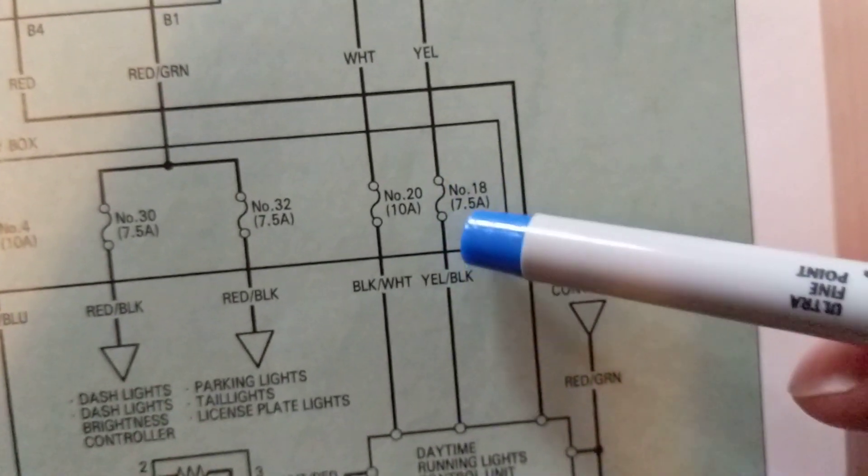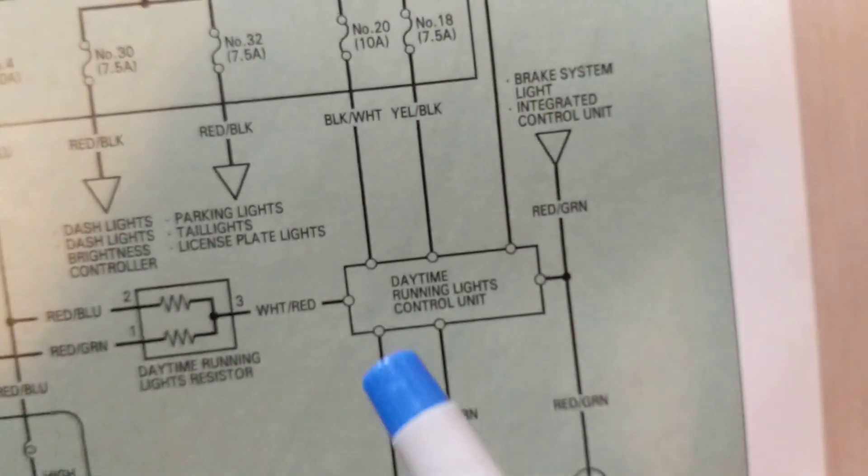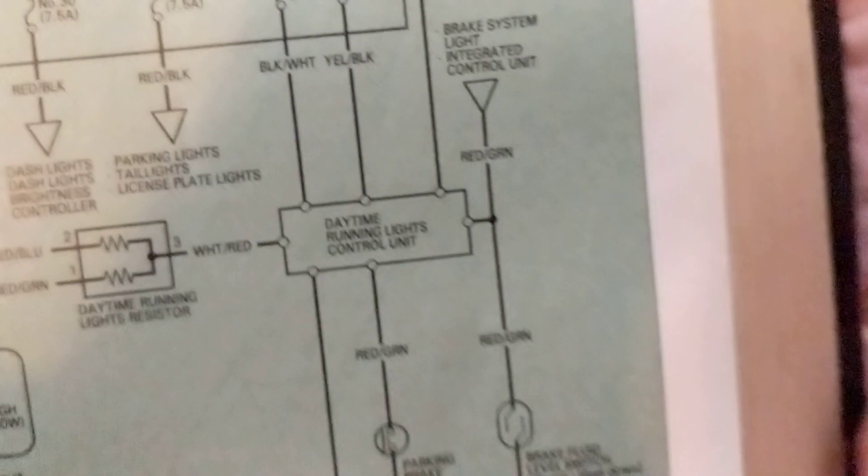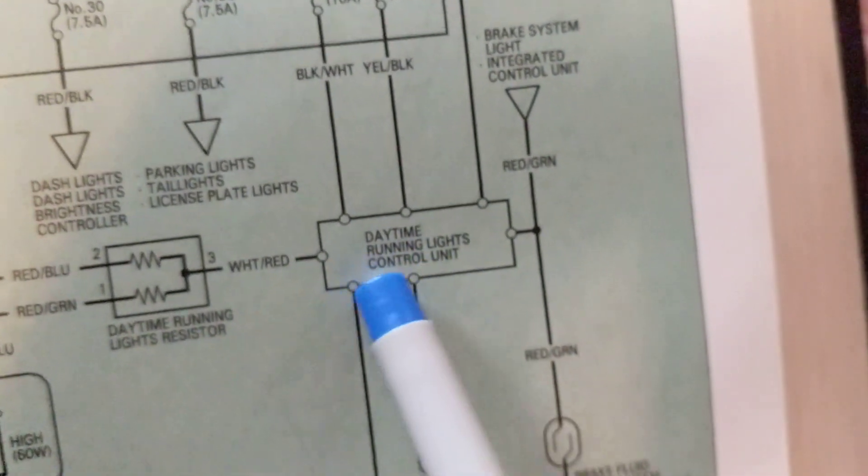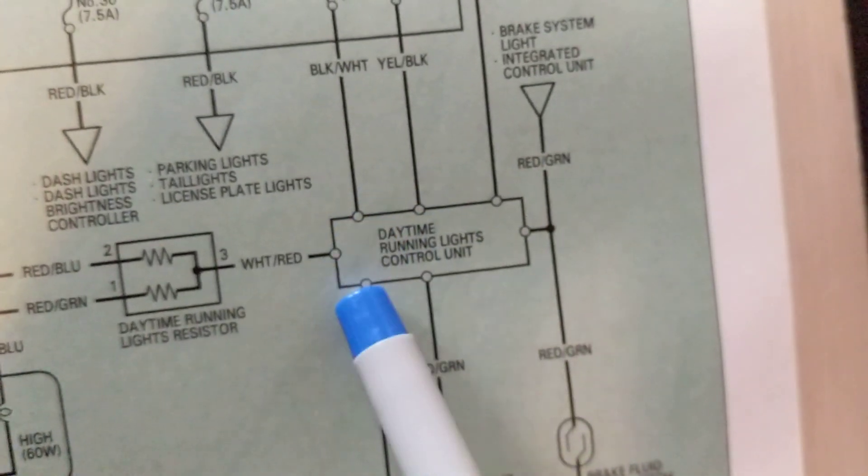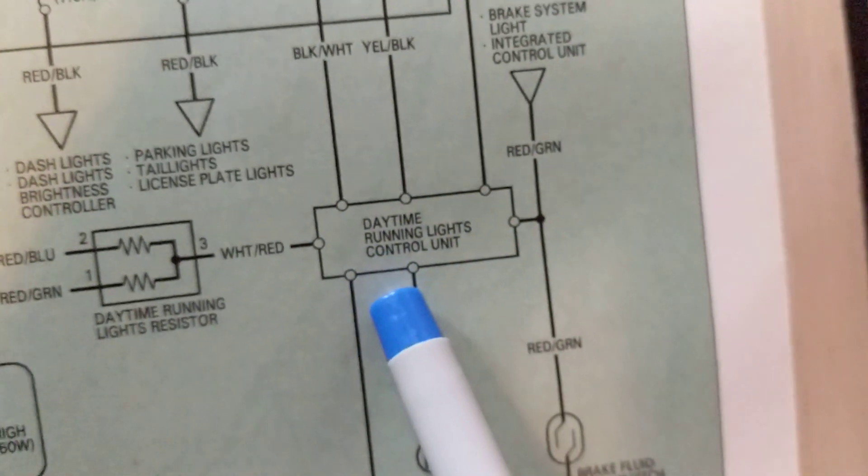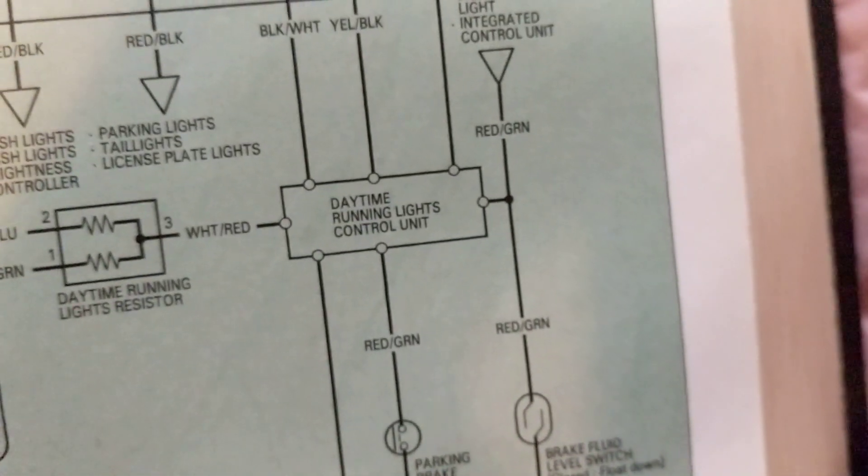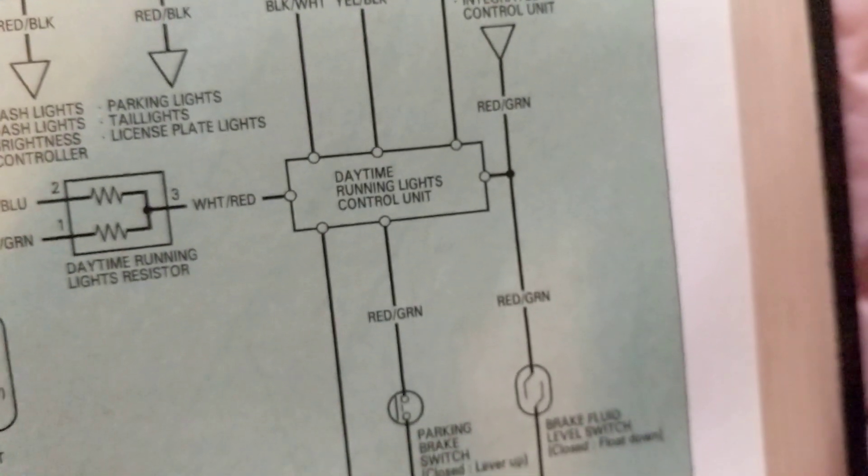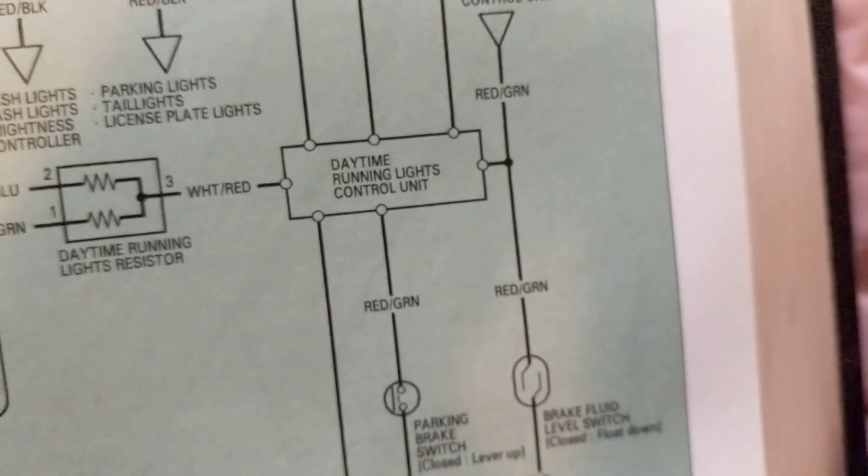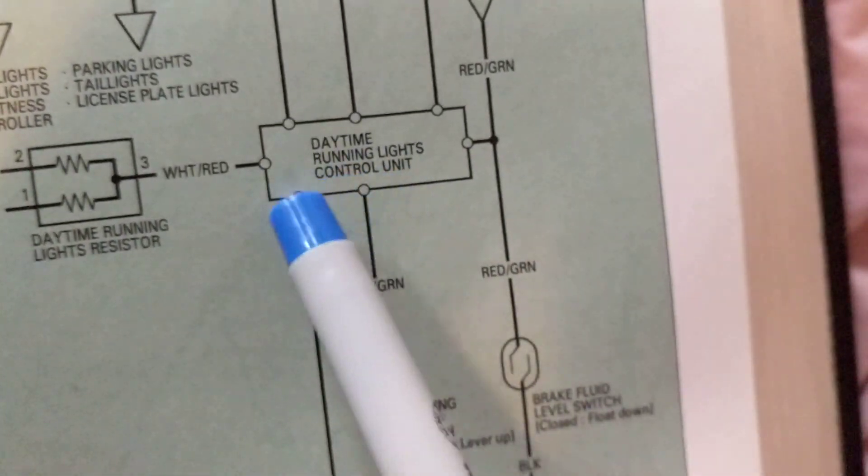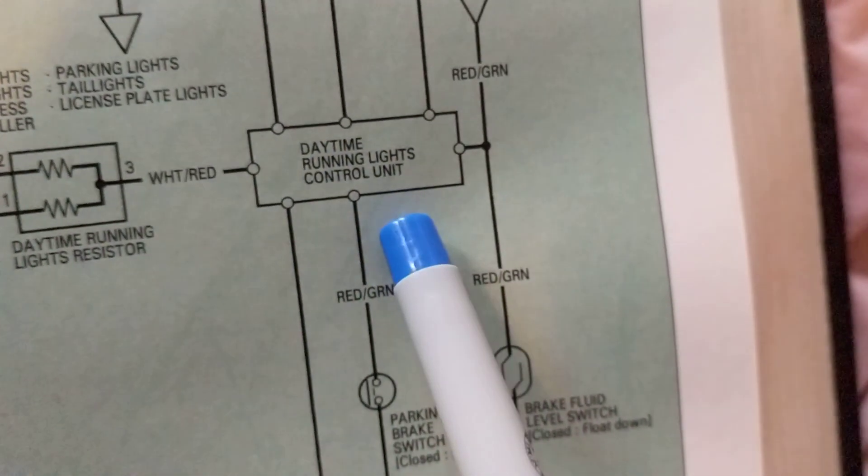Of the fuse 7.5 amps, this is a module. How do I know it's a module? Because there's so many connections to it. See, daytime running lights control unit. That means when you turn on the car, the lights go on automatic. Sometimes this module will control it.